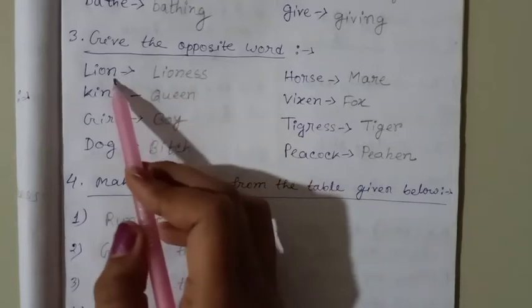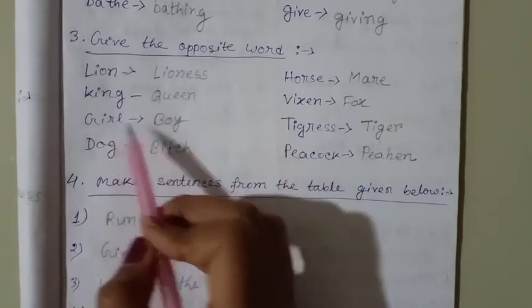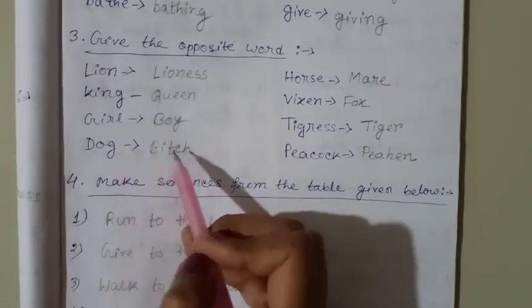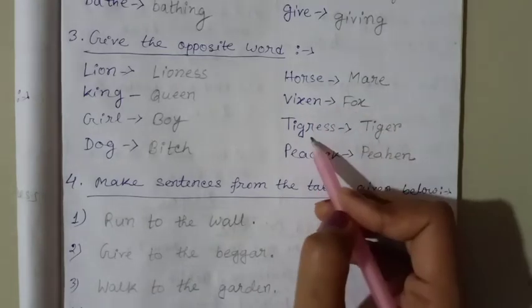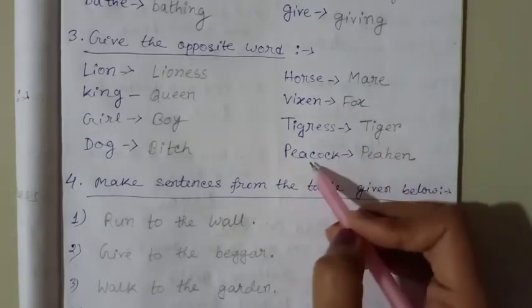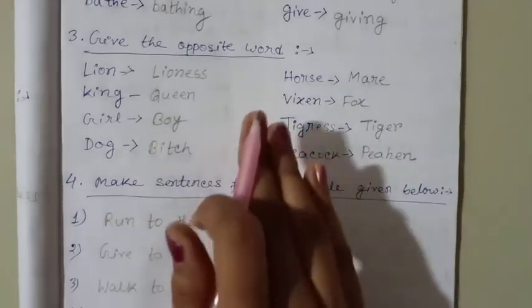These are the answers. Lion, lioness. King, queen. Girl, boy. Dog, bitch. Horse, mare. Vixen, fox. Tigress, tiger. Peacock, peahen. So read and remember this.